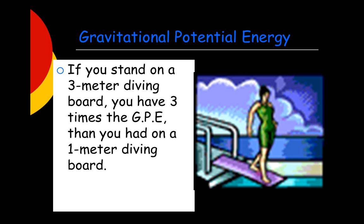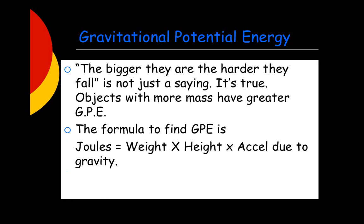If you stand on a three-meter diving board, you have three times the gravitational potential energy than you had on a one-meter diving board. The bigger they are, the harder they fall — it's not just a saying, it's actually true. Objects with more mass have greater gravitational potential energy. The formula is energy in joules equals weight times height times acceleration due to gravity.